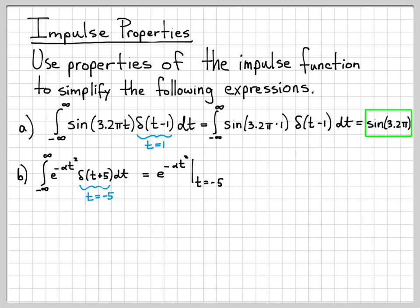which basically just means replace t with negative 5. So if I replace t with negative 5, I have negative 5 times negative 5. That's 25, and I'm left with e to the minus 25α.